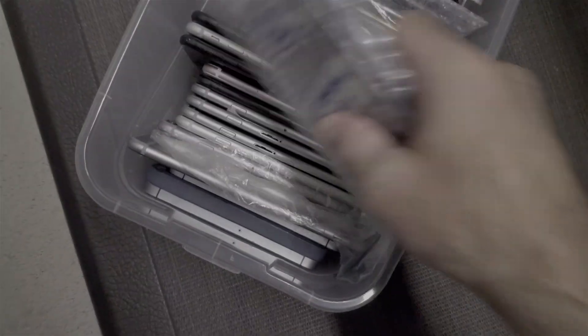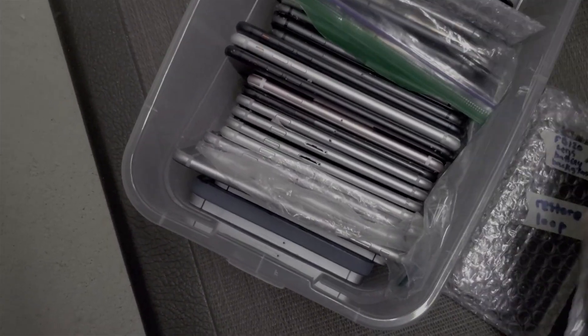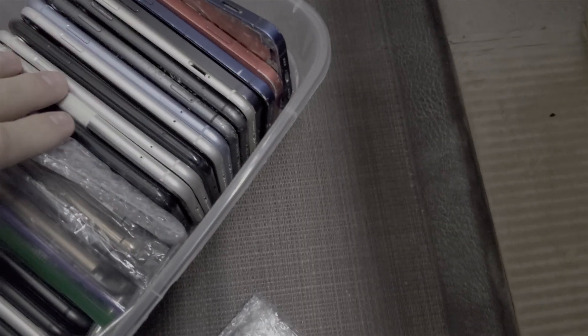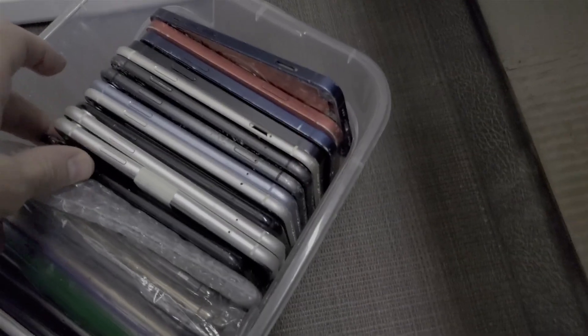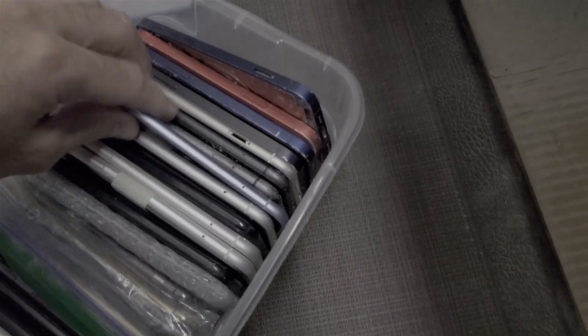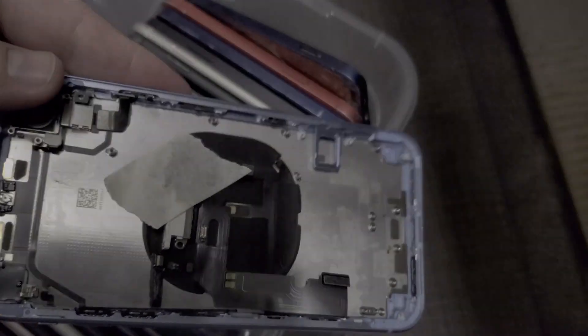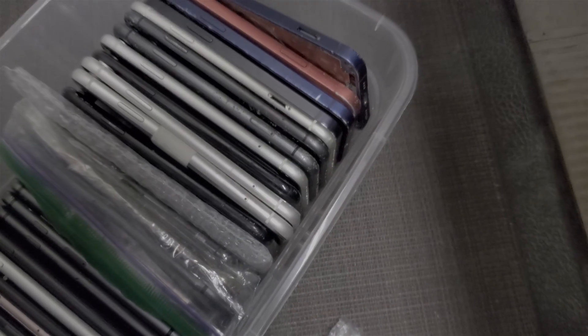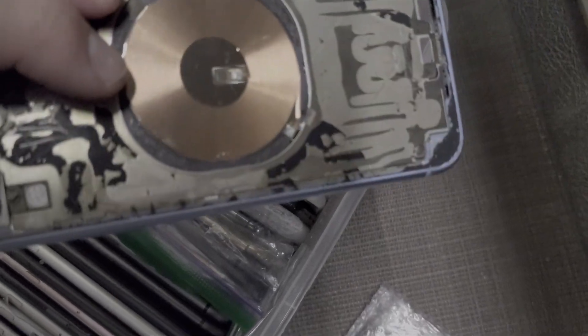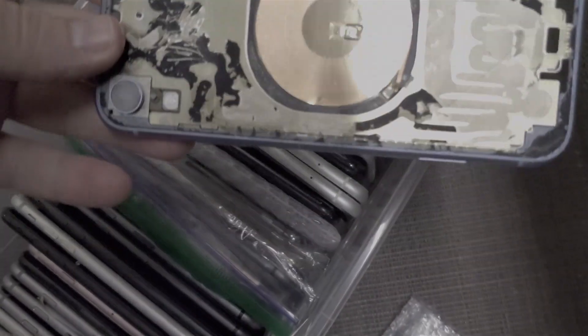May as well show you guys my massive box of phones that are all used for parts. There are so many of them. I have a lot of iPhone XRs. I'm just looking for one that's been emptied out. So this one here, you can see it has the power button still present, and if I flip it over, yeah, it's been stripped down a lot.